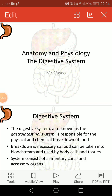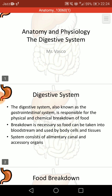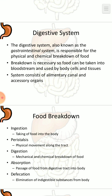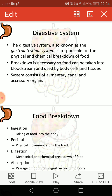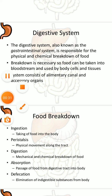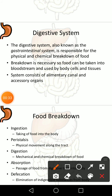Today we will discuss anatomy and pathology of the digestive system. The digestive system, also known as the gastrointestinal system, is responsible for the physical and chemical breakdown of food. Breakdown is necessary so food can be taken into the bloodstream and used by body cells and tissues. The system consists of the alimentary canal and accessory organs. The alimentary canal extends from the mouth to the anus.